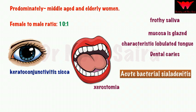Sjögren's syndrome is the most common underlying cause of acute bacterial sialadenitis in ambulatory patients — a very important dental entrance exam question. The most common causative microorganism is staphylococcal or pneumococcal.